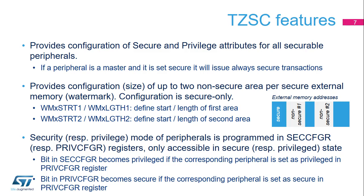The SEC-CFGR registers set the secure attribute of peripherals and are only accessible in secure state. They can be restricted to privileged state according to the PRIV-CFGR register setting. The PRIV-CFGR registers set the privileged attribute of peripherals and are only accessible in privileged state. They can be restricted to secure state according to the SEC-CFGR register setting. On power-on and reset, the TZSC clears all bits of the SEC-CFGR-X and PRIV-CFGR-X registers to zero, which respectively means non-secure and unprivileged.